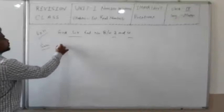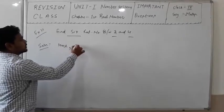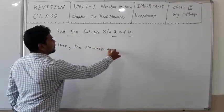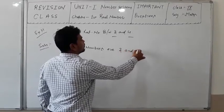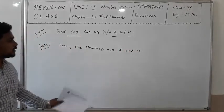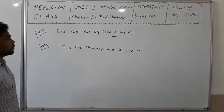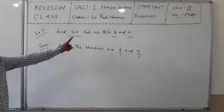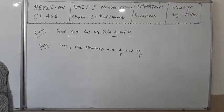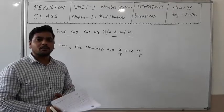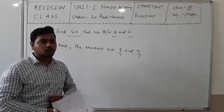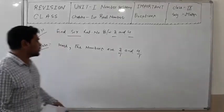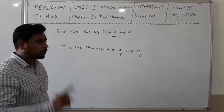The solution is here. The numbers are 3 and 4. We can write 3 as 3/1 and 4 as 4/1. We are finding 6 rational numbers between 3 and 4. First, the denominators should be equal — like 3/1 and 4/1. The denominators are already equal.